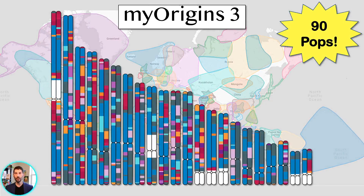You've seen that your result comes with a chromosome painting. Percentages and chromosome painting are actually two different types of ancestry analysis, so in a few minutes I'll explain how we combine the two. But first, how do we come up with our populations in the first place?